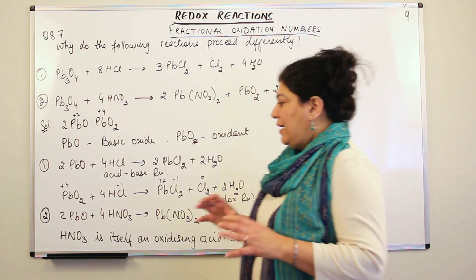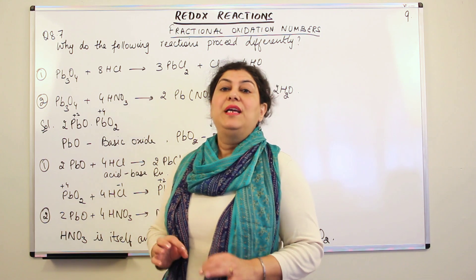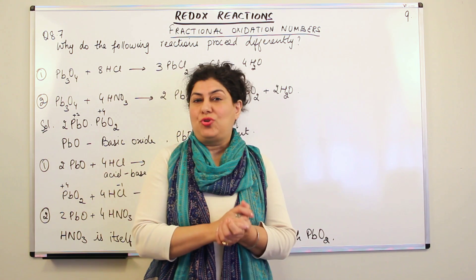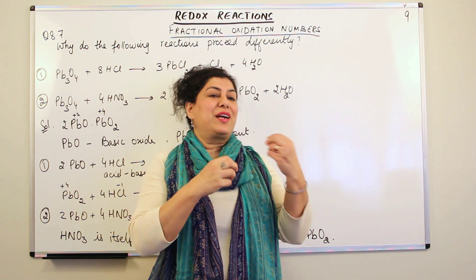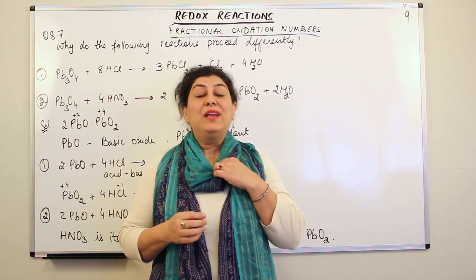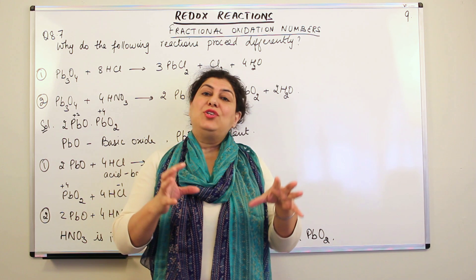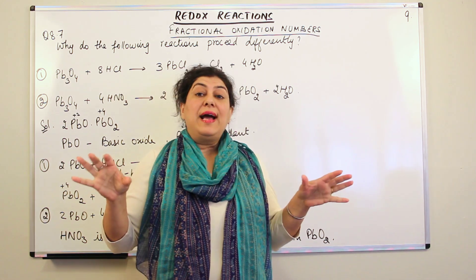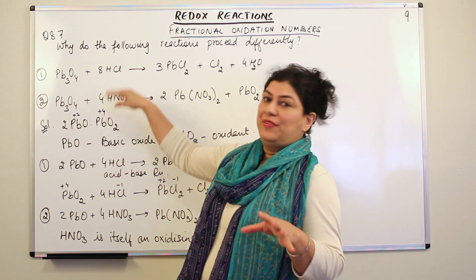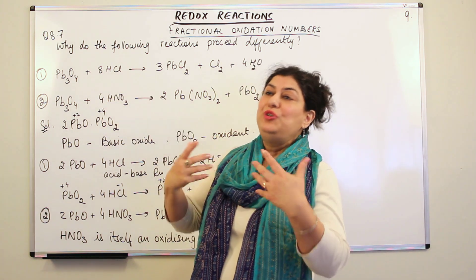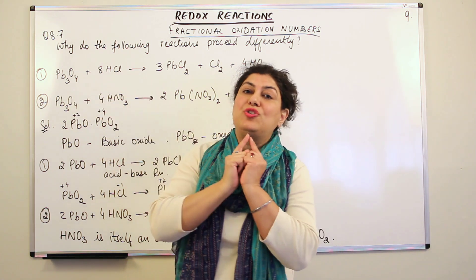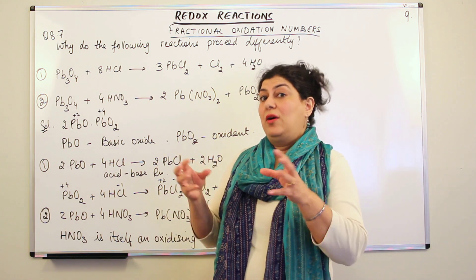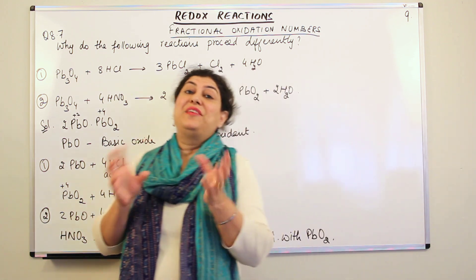This was a question which was really important for you to understand how we have mixed oxides, how we have fractional oxidation numbers, and why in a mixed oxide you may have reactions which are different. This reaction can only be explained if you knew that Pb3O4 was not a single compound — it was actually a mixture of compounds, and those compounds had different properties.